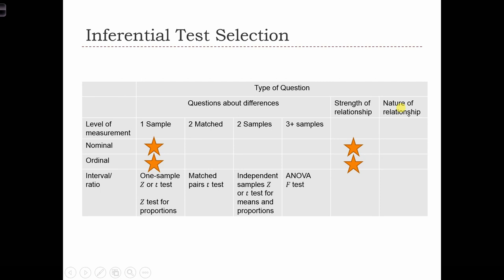We're also going to use the chi-squared test in order to do contingency analysis or to see whether or not two nominally or ordinally measured variables have a relationship with one another.